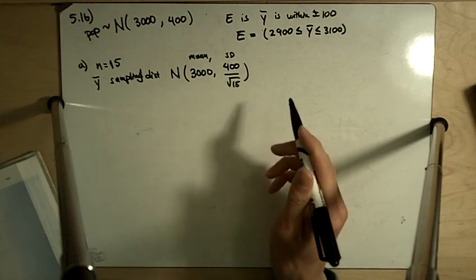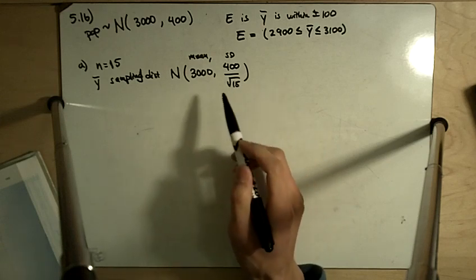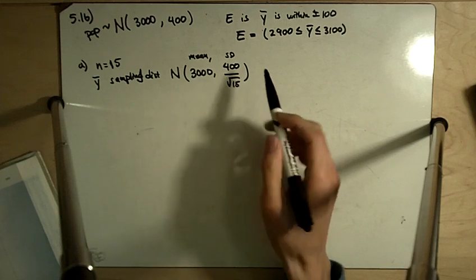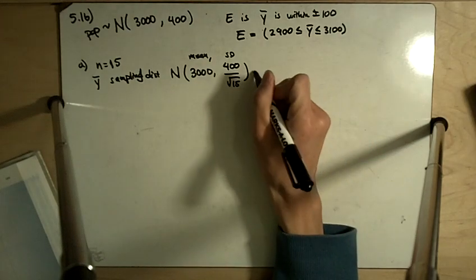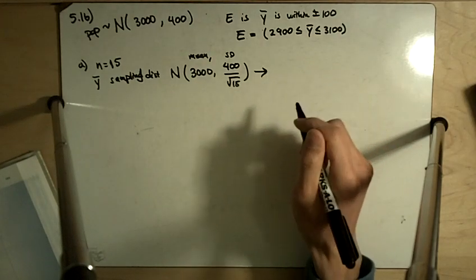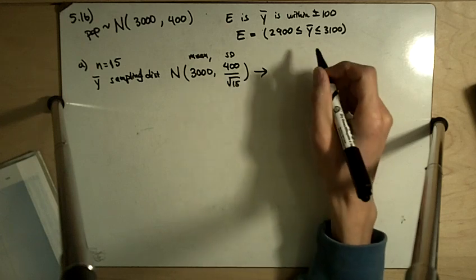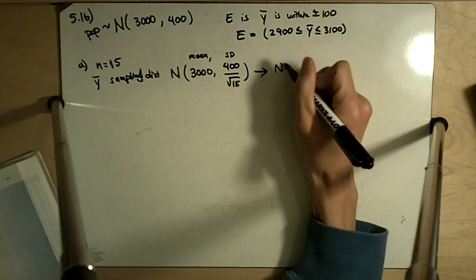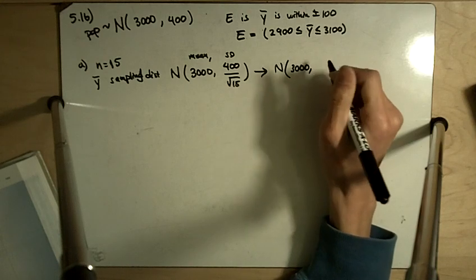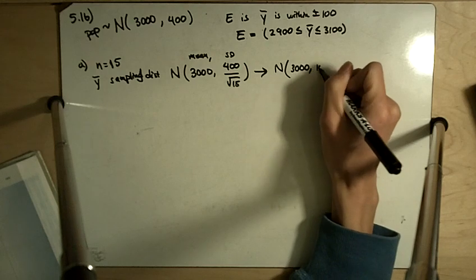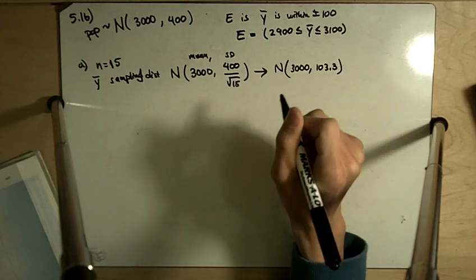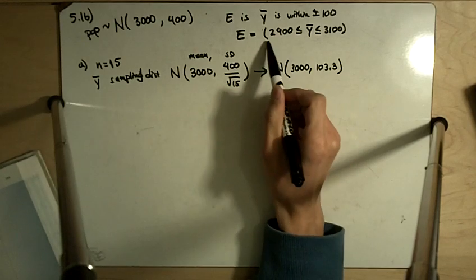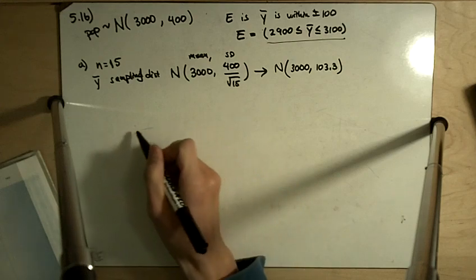Those sample means, if we do this over and over, we'll have a sampling distribution, and that sampling distribution will have mean 3000 and standard deviation 400 divided by square root of 15. If you do 400 divided by square root of 15, square root of 15 is just a little bit less than 4, and so you end up getting 3000 and this ends up being 103.3. Now we want to know what's the probability that it's going to be between 3100 and 2900.